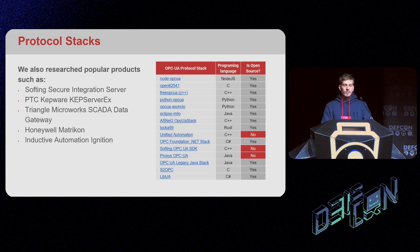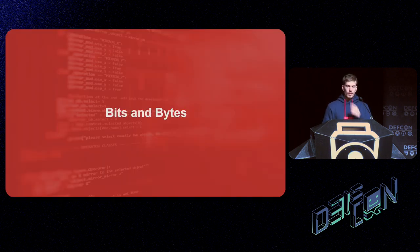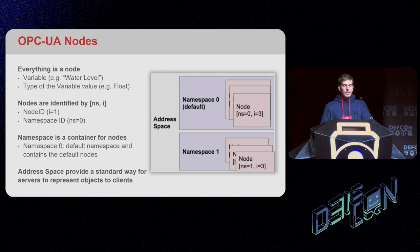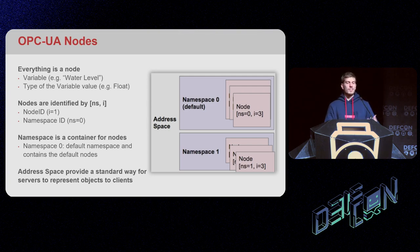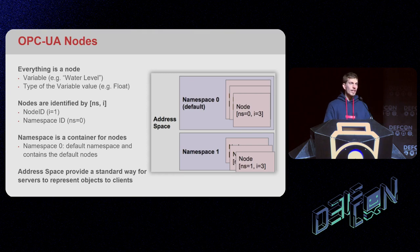Before we dive into vulnerabilities, let's quickly go over how OPC UA is implemented. In OPC UA we have the concept of nodes — everything is a node. For example, our water level variable is a node of type variable with subtype float. OPC UA also has the concept of namespaces — containers for nodes. We can have a namespace with all the base nodes and create our own namespace that extends different objects for our purposes.